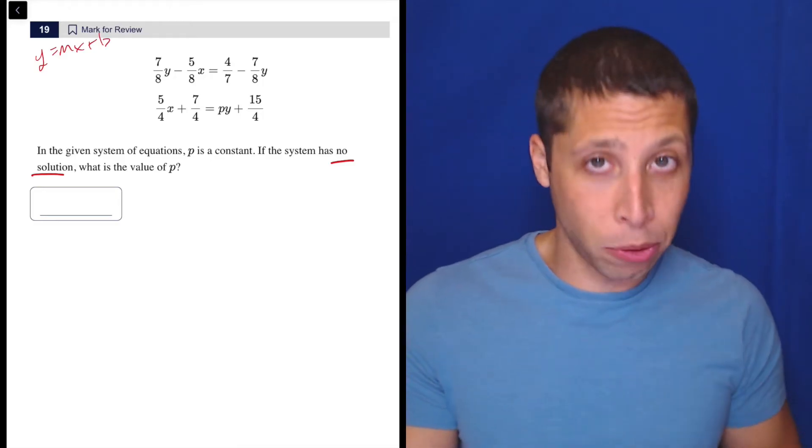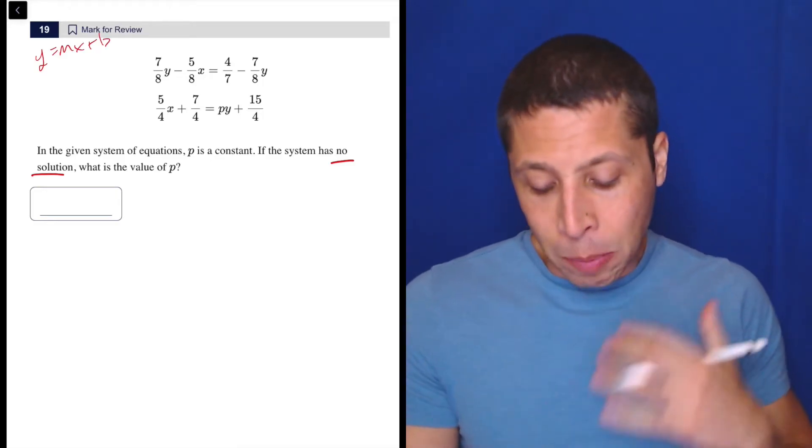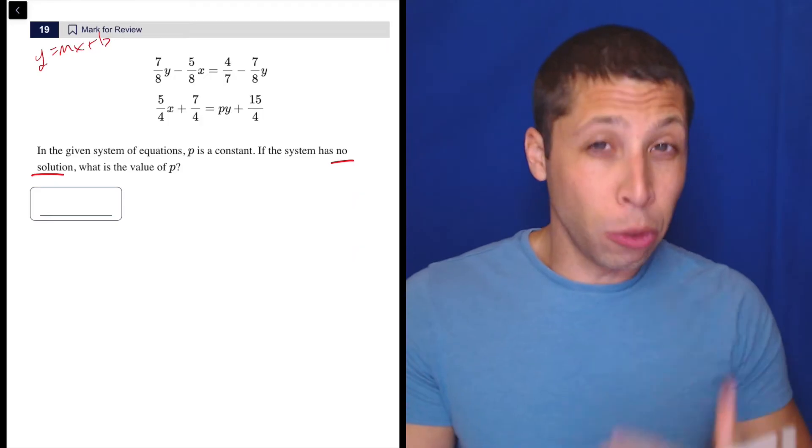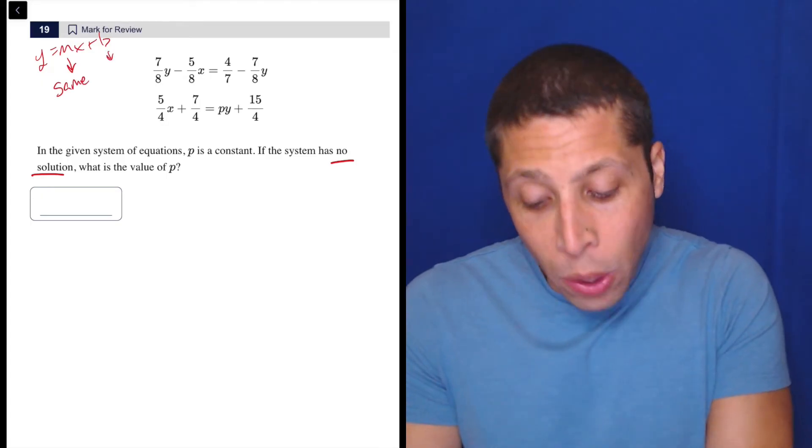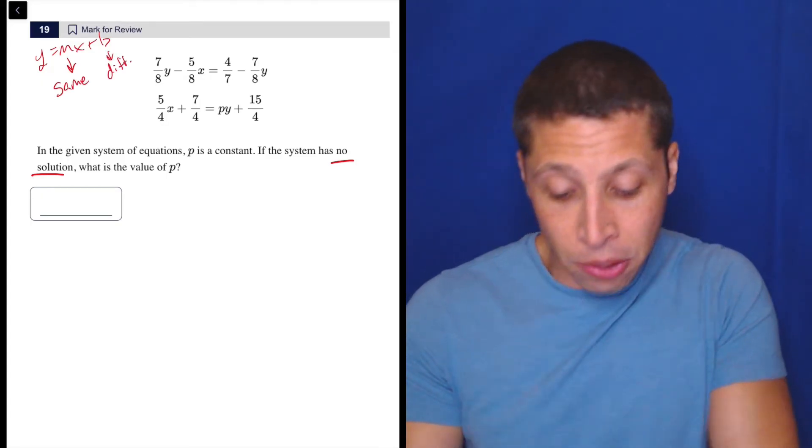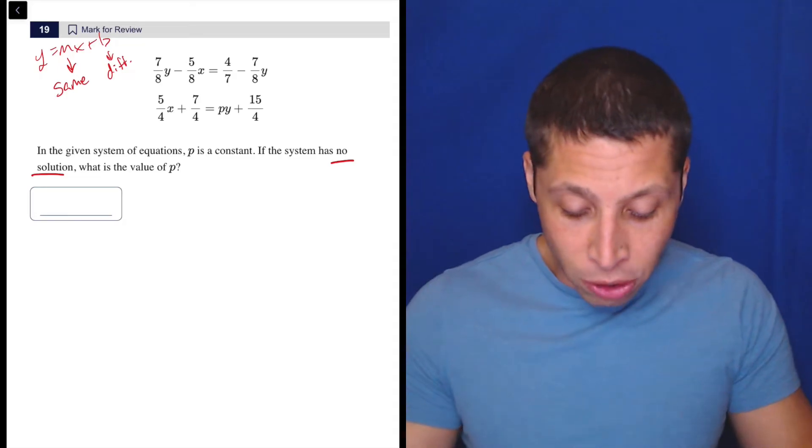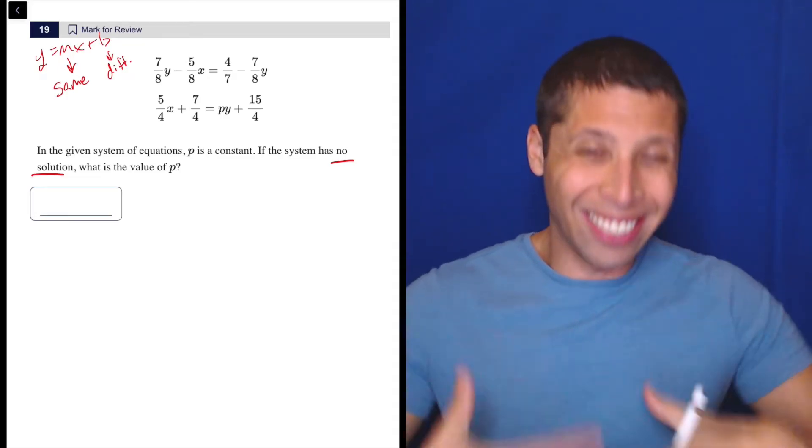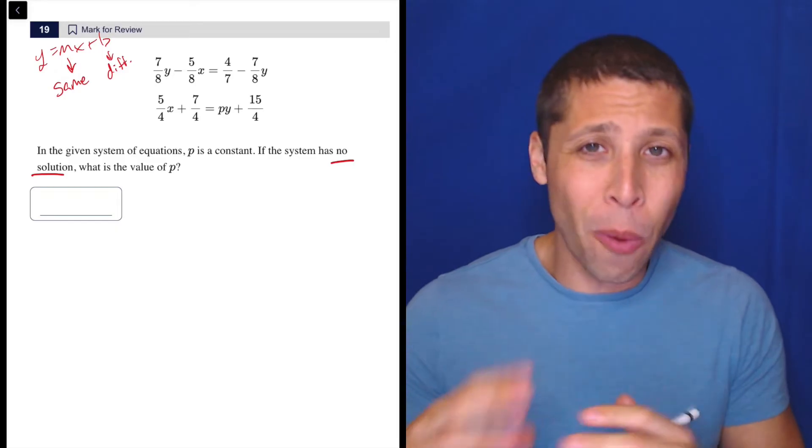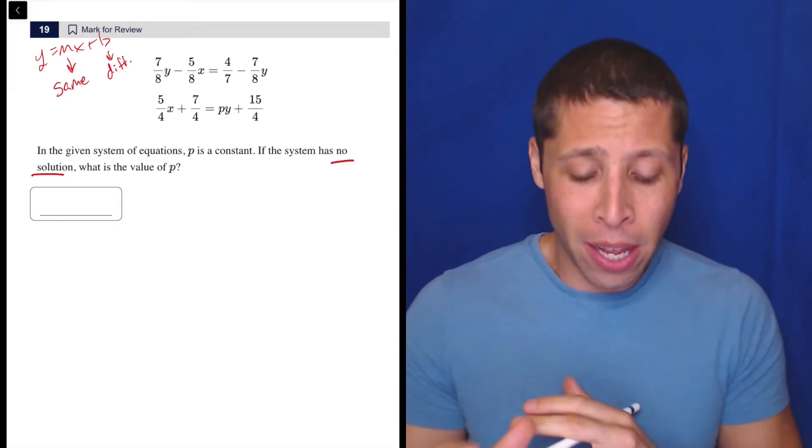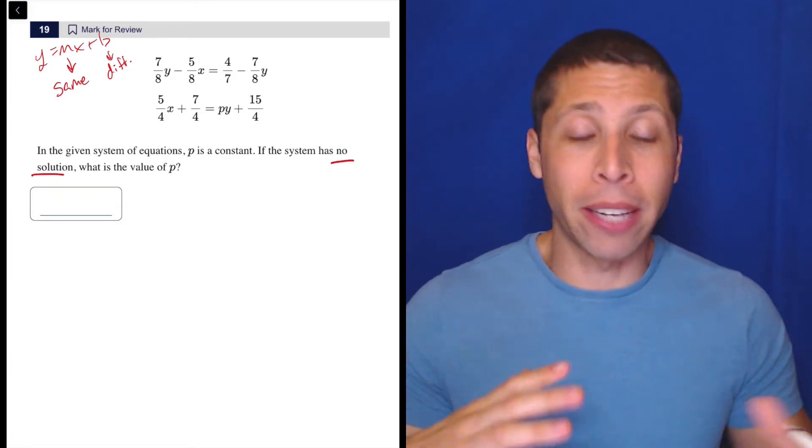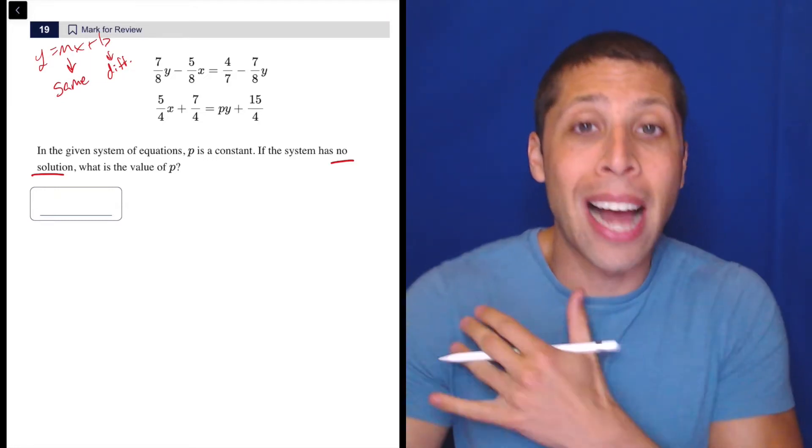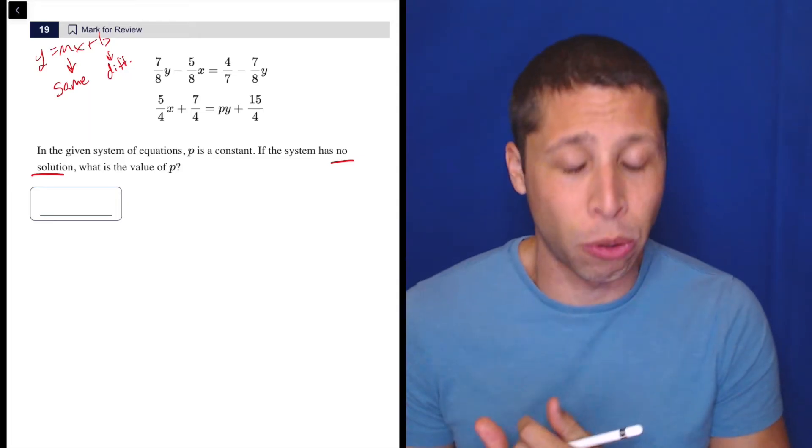We want to think about it in terms of y equals mx plus b, and specifically when we have no solutions, we are interested in the m. We want the slopes to be the same. But we will have different y-intercepts. There's no constant attached to any of the y-intercept pieces, so I won't have to worry about that. I kind of know that's going to be different without having to worry about it, and for us to have no solutions.